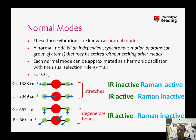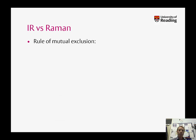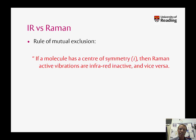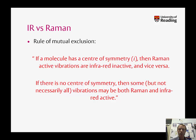So here we can see the complementarity between infrared and Raman vibration spectroscopy. In fact, there's a rule of mutual exclusion which you can use to work out whether a vibration is going to be infrared or Raman active. This rule states that if a molecule has a centre of symmetry — represented with the letter I — then Raman active vibrations are infrared inactive and vice versa. If there's no centre of symmetry, then some, but not necessarily all, vibrations may be both Raman and infrared active. We'll come back to this in the symmetry course later on.